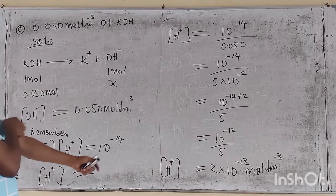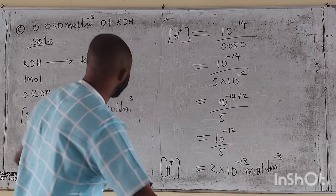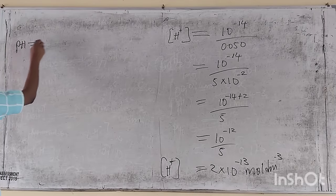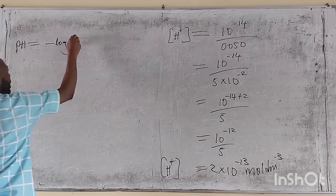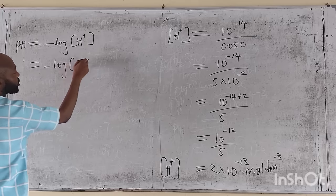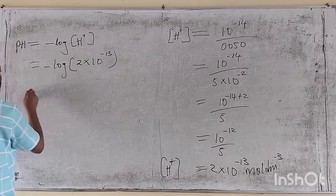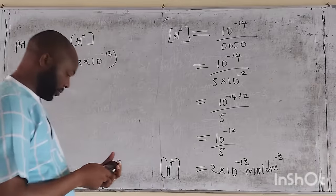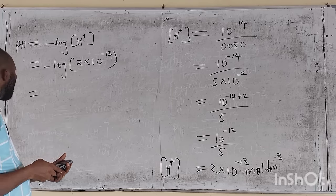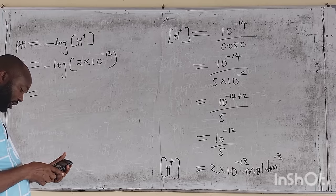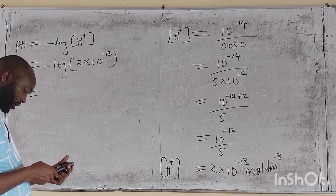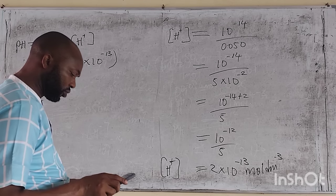pH is equal to the negative logarithm of hydrogen ion concentration, which is minus log of 2 times 10 raised to minus 13. This gives us approximately 12.7.